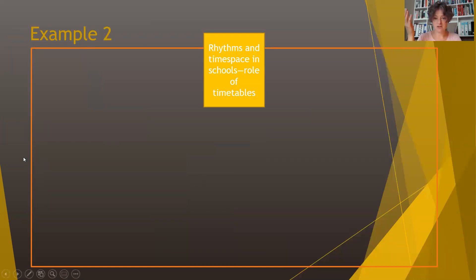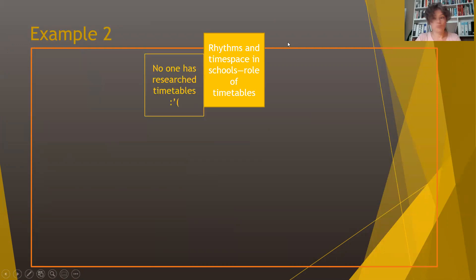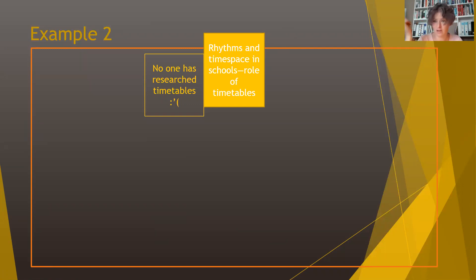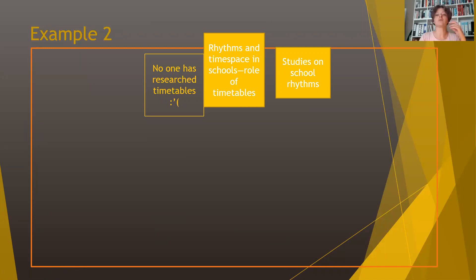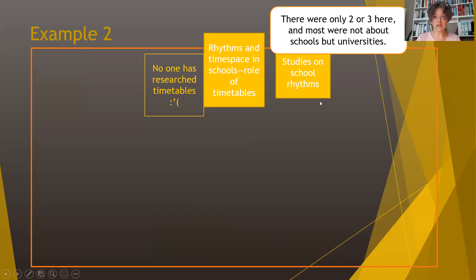Here's another example: rhythms and time-space in schools and the role of timetables — my own thesis. I couldn't find anybody who had researched schooling timetables. So all of a sudden I'm going into my literature review and thinking: what do I do? Because I need to show engagement with stuff that matters here, but it's a very niche, very underdeveloped field. I found studies on school rhythms — that was my lens for thinking about timetables — but there were only two or three, and they weren't related to schools but to universities or adult education centers. So my literature very close to my question was very, very thin.